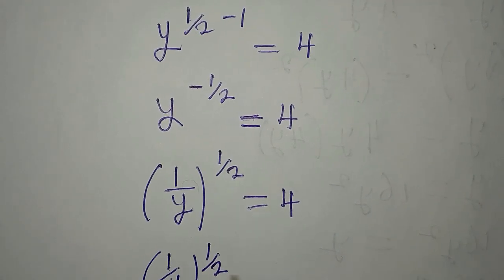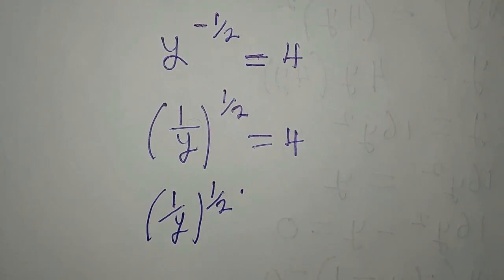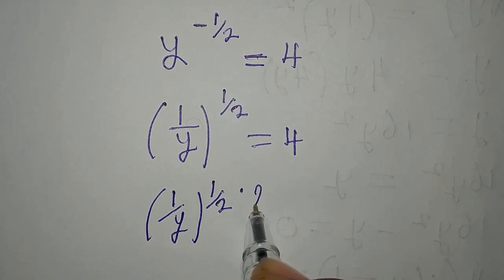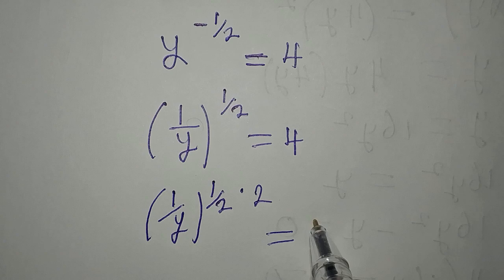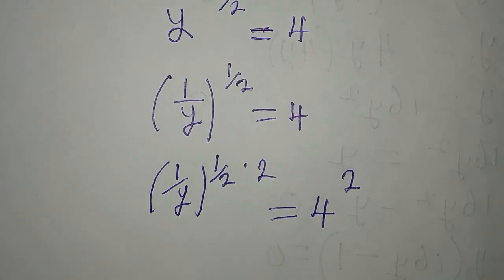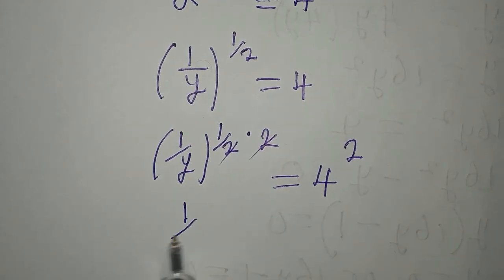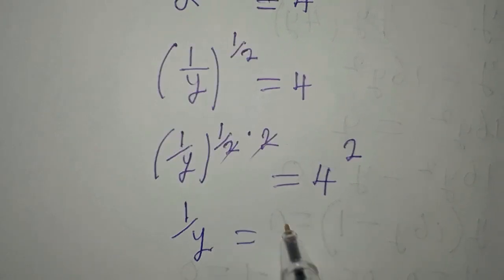We are interested in removing the power from here. So we have 1 over y to the power of 1 over 2. To remove the power, you multiply the same power by its reciprocal, and the reciprocal of 1 over 2 is 2. Then on the other side we will square the 4.